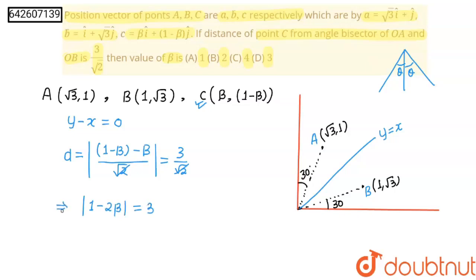Okay, students? Now, from here, we will remove modulus 1 - 2β = ±3. So, when I will take plus sign, I will get β = -1. You can solve this. I will take minus sign. This will go that side, 1 - 2β = -3, we will get 2β = 4. We will get β = 2.